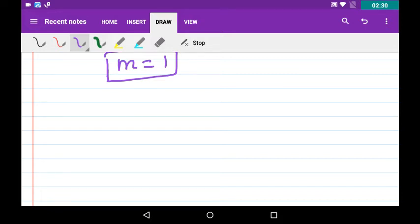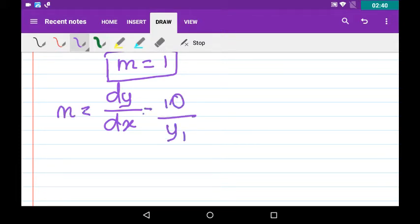Now we have to find another thing: dy/dx, which is nothing but m, equals 10/y. We know the value of m = 1. When you put it here, you will get y₁ = 10, so y₁ = 10.